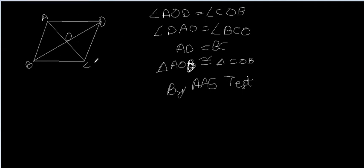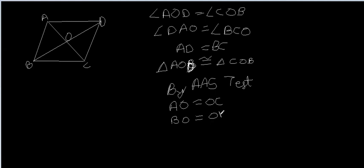If these two triangles are congruent, we can say that AO equals OC, and BO equals OD. Hence we have proved that O is the midpoint of both diagonals. Therefore we have proved that the diagonals of a parallelogram bisect each other.